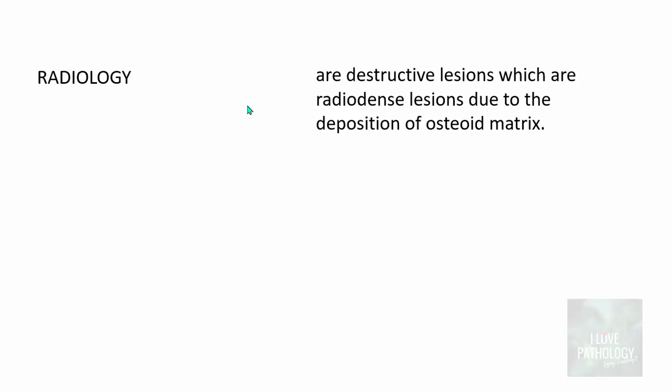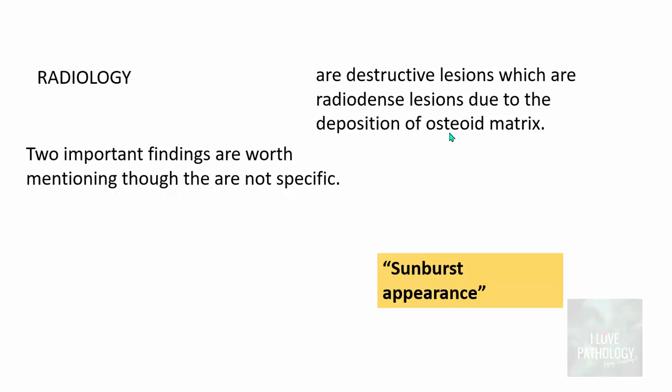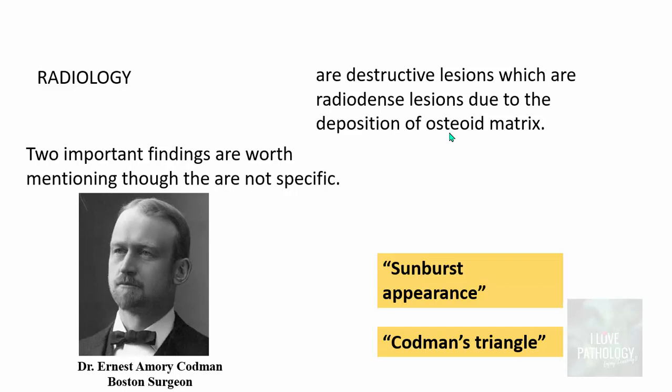Radiologically, Osteosarcomas appear as destructive lesions which are radiodense because of the deposition of osteoid matrix. Two important findings worth mentioning: sunburst appearance and Codman triangle — named after Dr. Codman, a Boston surgeon. Although not specific for Osteosarcomas, they are quite commonly found in these tumors.